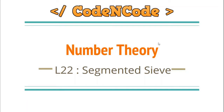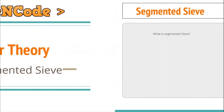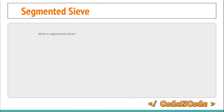Hello guys, this is Code and Code, and this is the 22nd lecture of the Number Theory series. In this lecture we are going to study about segmented sieve. So the first question that arises is: what is segmented sieve? Segmented sieve is a way to generate prime numbers in a given range.